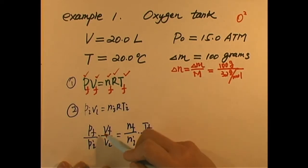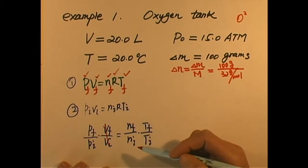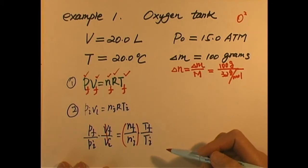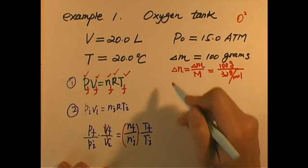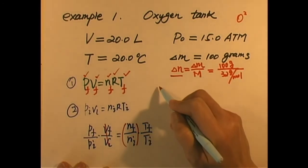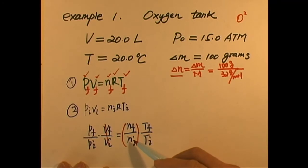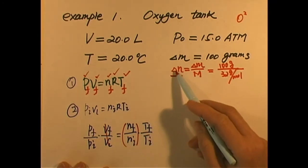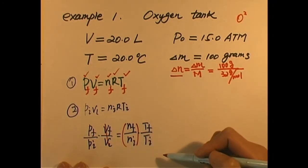This is a general situation that if you use an ideal gas equation to describe initial situation and describe final, and then you just divide one by each other. Now, in our case, initial volume, final volume cancels, and everything else is constant. So we need to find out the ratio of n final over n initial. Well, n final, n initial, we don't know, but we know delta n. So if we know n initial, then we subtract delta n, we get n final.